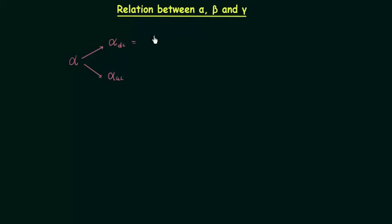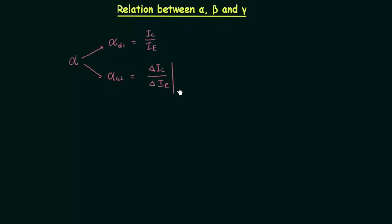Alpha DC is equal to the ratio of collector current (the output current) to the emitter current (the input current). Alpha AC is equal to the ratio of change in collector current to the change in emitter current when the output voltage VCB is constant.